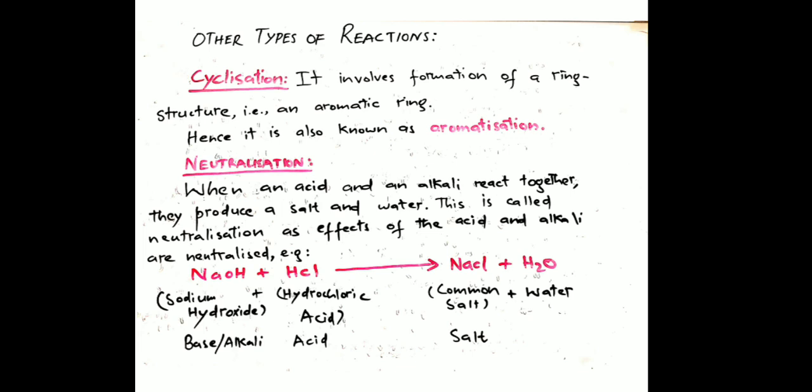Other reactions include cyclisation and aromatisation, which involve forming a ring structure. The ring means all bonds are closed — like benzene, where all rings are closed. This is aromatisation: the reactants have a straight chain structure and the product has a ring structure, which is the cyclisation process.